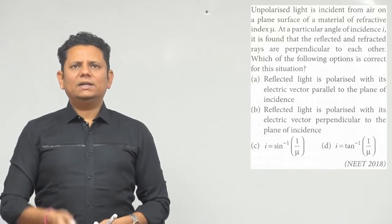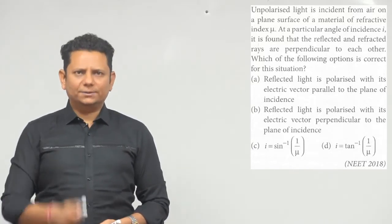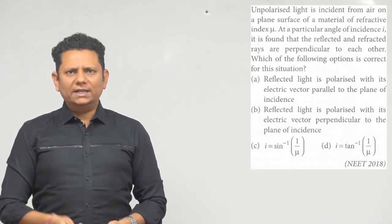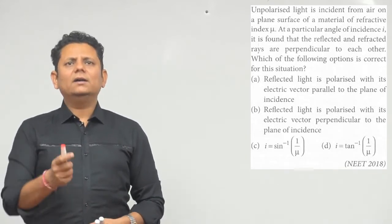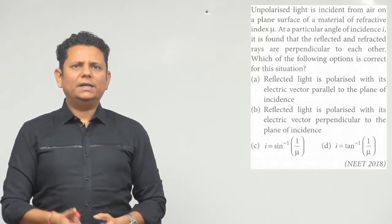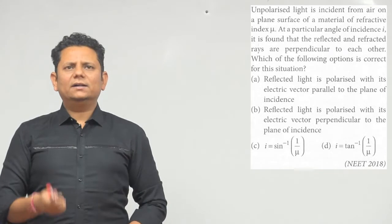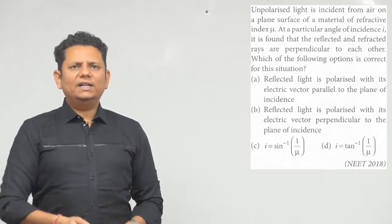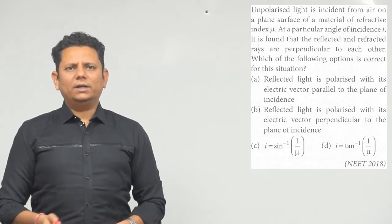The question is, which of the following statements is correct for this situation? The first option is reflected light is polarized with its electric vector parallel to the plane of incidence. Option B is reflected light is polarized with its electric vector perpendicular to the plane of incidence.